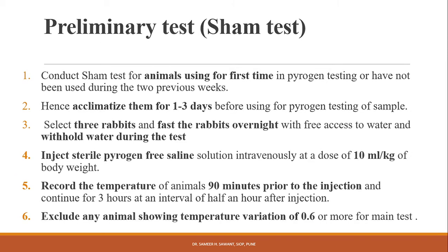Now the preliminary test, also called the sham test. The sham test must be conducted on animals being used for the first time in pyrogen testing or those that have not been used during the previous two weeks. These animals need to be acclimatized for one to three days before using them in the pyrogen testing of the sample.